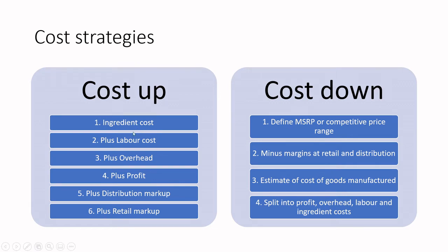Add in a profit margin and that gives you your cost of goods manufactured. Then you add all the different markups at distribution and retail — that's the cost-up strategy. Oftentimes when I work with product development students they'll cost out a recipe and stop at step one. I challenge them on labor and overhead, and that's where we take it in our classes. The challenge is when we start adding all these markups we could be completely out of range when it comes to hitting the right price target.